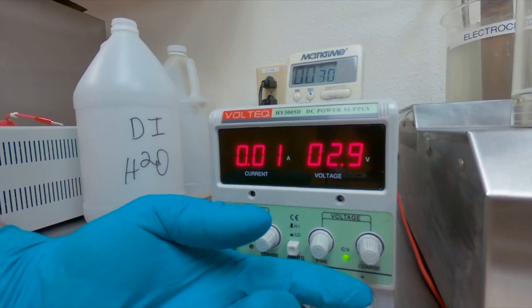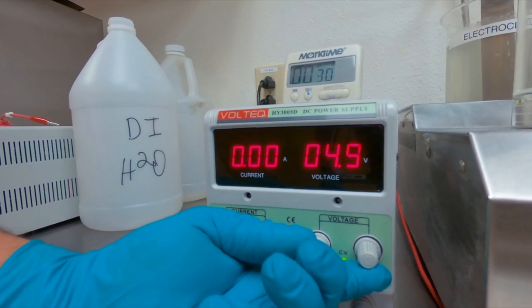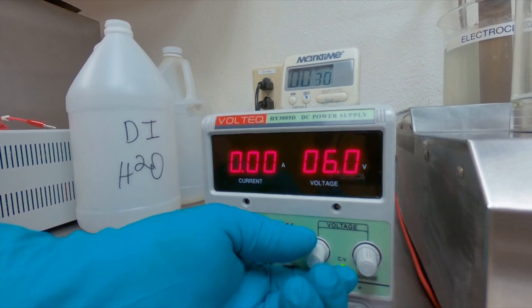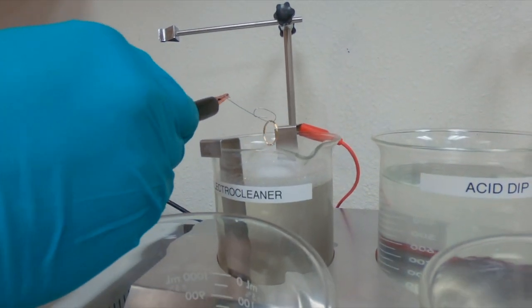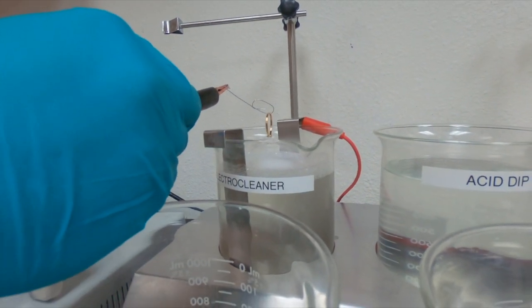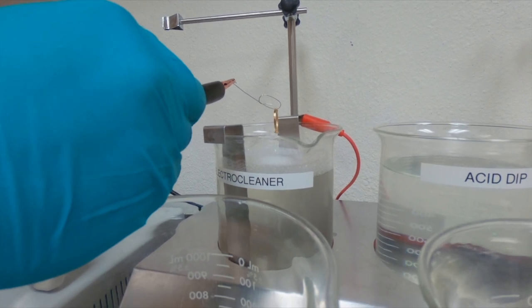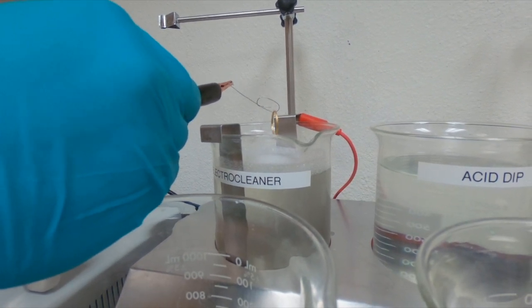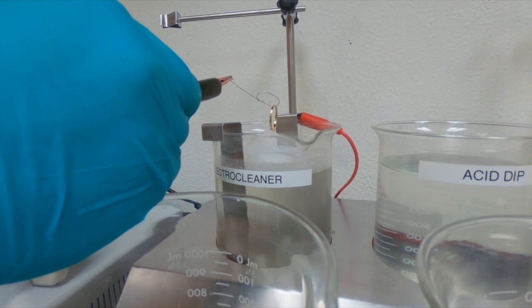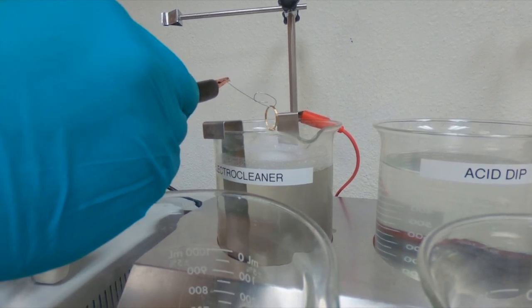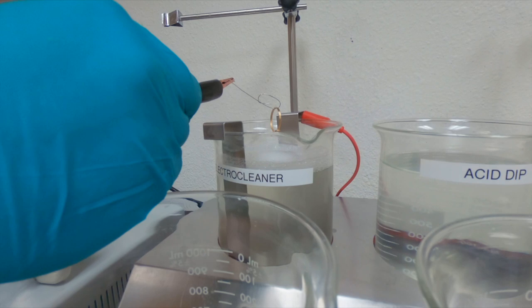First step is to electro clean our piece. I'm going to set our rectifier to six volts. I have my piece fixtured on a stainless steel handling wire. Stainless steel is a great option for your handling material. It does not contaminate any of your plating solutions. So if you're not too sure of what can contaminate your solution, stainless steel is a great option.